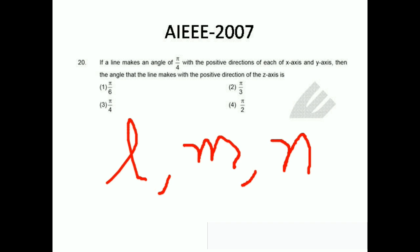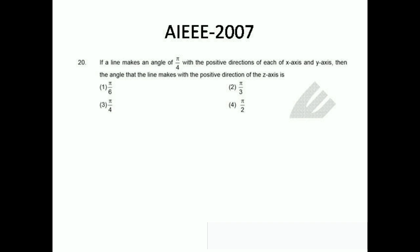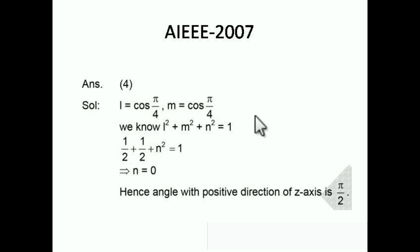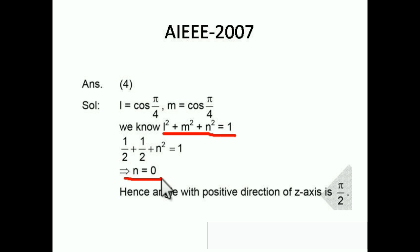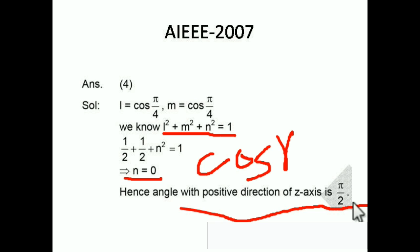Since l = cos(π/4) = 1/√2 and m = cos(π/4) = 1/√2, substituting into l² + m² + n² = 1 gives 1/2 + 1/2 + n² = 1, so n² = 0, meaning n = 0. Since n = cos(γ), we have cos(γ) = 0, which gives γ = π/2. So the line makes an angle of π/2 with the positive z-axis. The right answer is option 4: π/2.